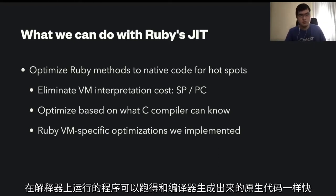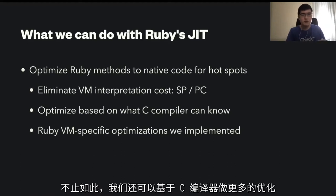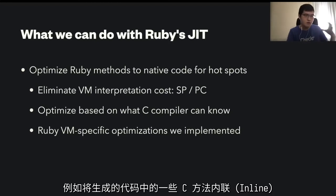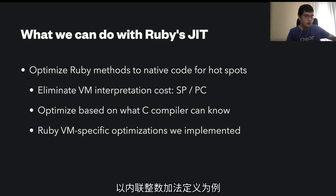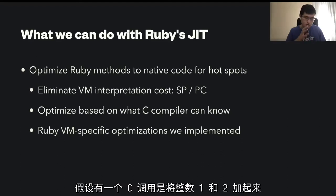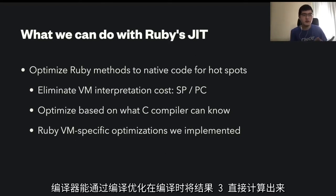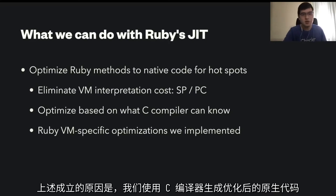Not only that, we can also optimize based on what the C compiler can know. For example, if we inline C code into a generated .c file, the compiler can know what it can optimize. For example, if we inline the integer plus definition — if there's C code with integer one plus integer two via the integer plus method — the compiler can generate integer three through its implemented optimizations, because we use a C compiler to optimize the C code to native code.